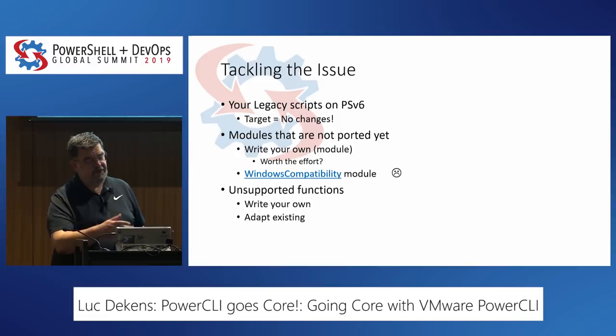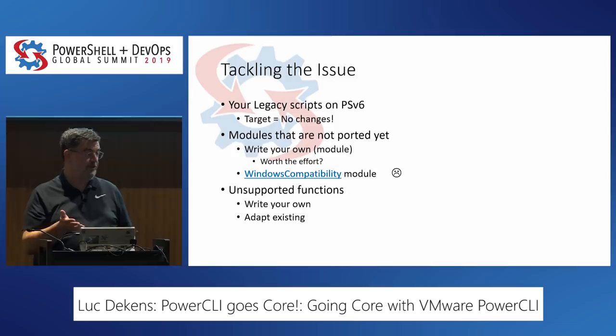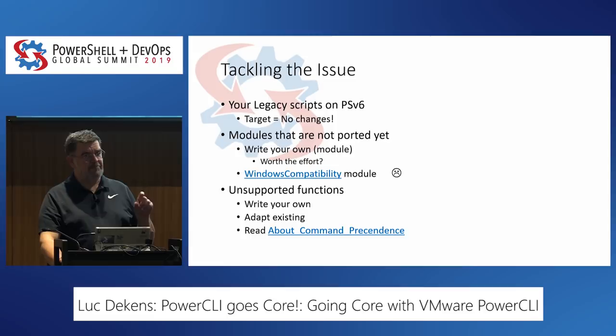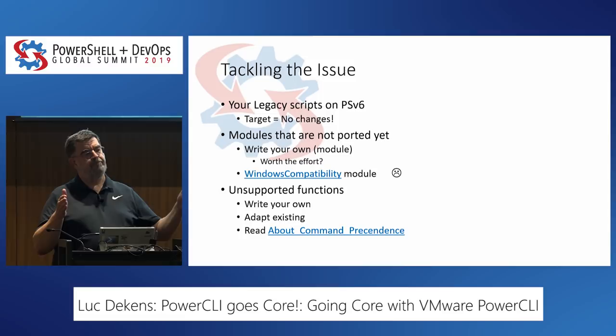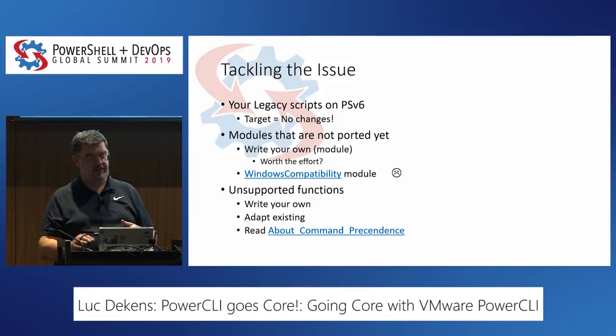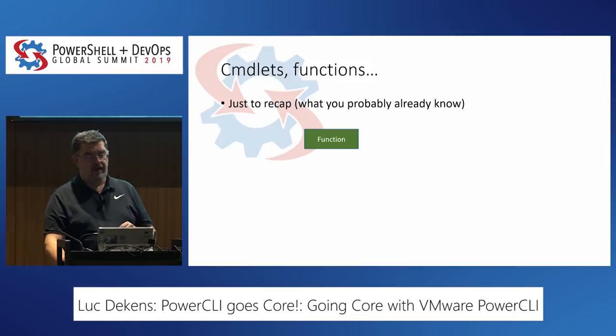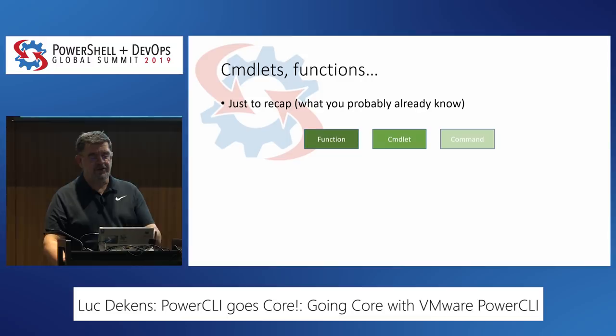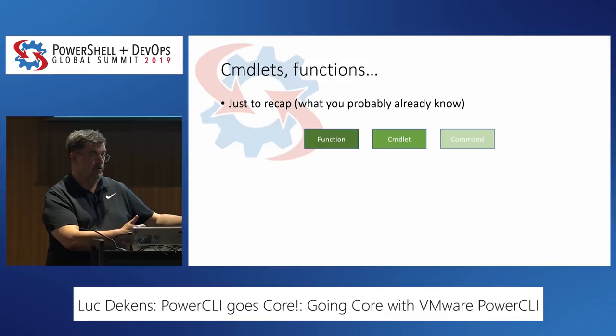For functions that are not supported in the Core module, you can write your own functions or adapt the existing ones. What's important here is to understand command precedence. You can have multiple types of executables in PowerShell — functions, cmdlets, and so on — and there's a precedence order the system uses. If you have a function with the same name as a cmdlet, your function takes priority. The lowest level is 'command' — a DOS or Linux command like PS or LS.